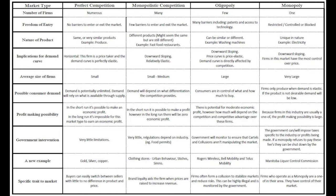With oligopoly, remember that your book told you to look and see if the top four businesses in that market own at least 60% of the market share. That's like Coke and Pepsi for an example. There are only a few sellers — remember, oligos is Greek for a few. Are the products standardized, differentiated, or both? Here it's both — it depends on what industry the oligopoly is in.